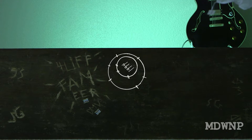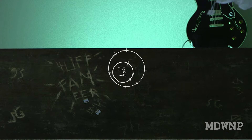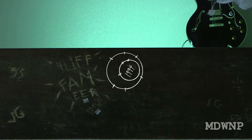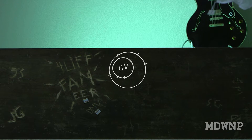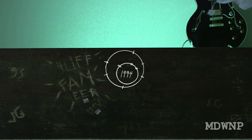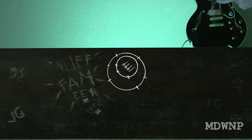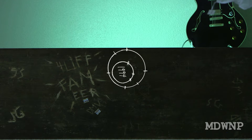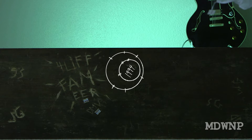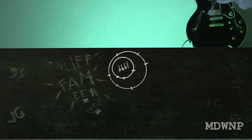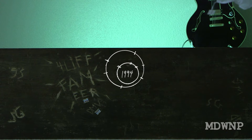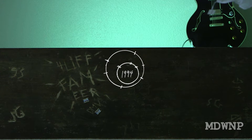What we have here is the special effect that will be in the film, or some version of it. I have the spinning circles with the 1994. That's going to be part of the story, and that whole graphic is the special effect I wanted to share.